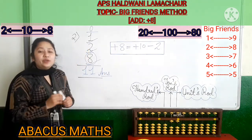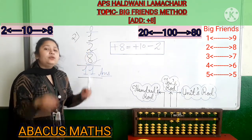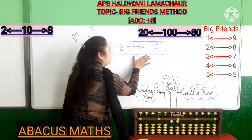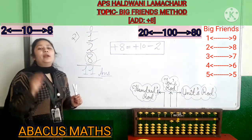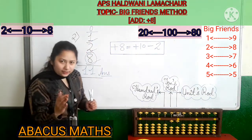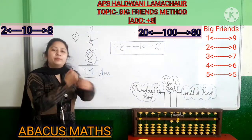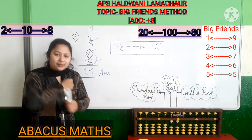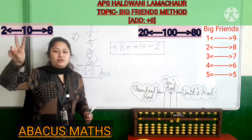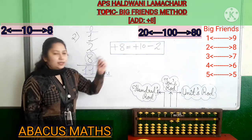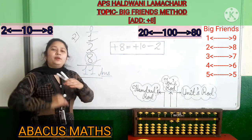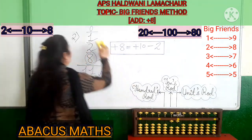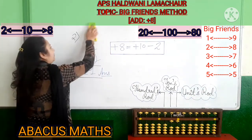See kids, it is very, very easy. You only have to keep in your mind: for adding 8, you have to do plus 10 minus 2. Plus 10, minus 2. And plus 10 we will put in the 10s slot.